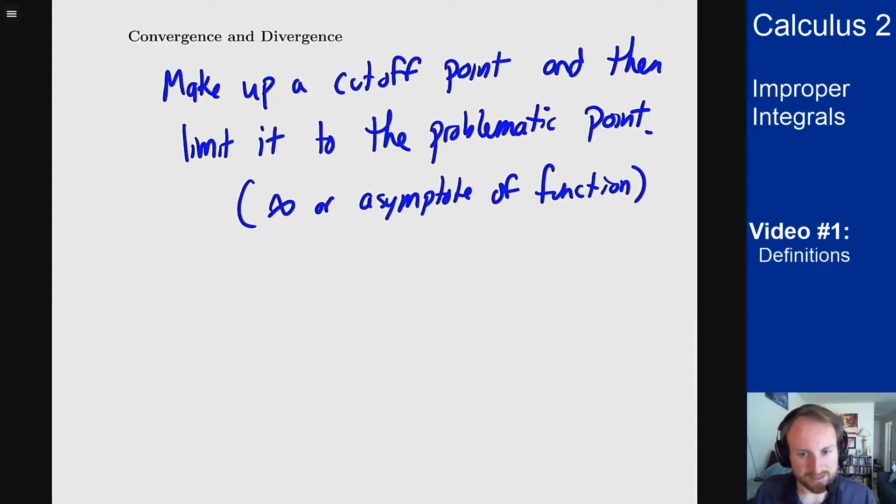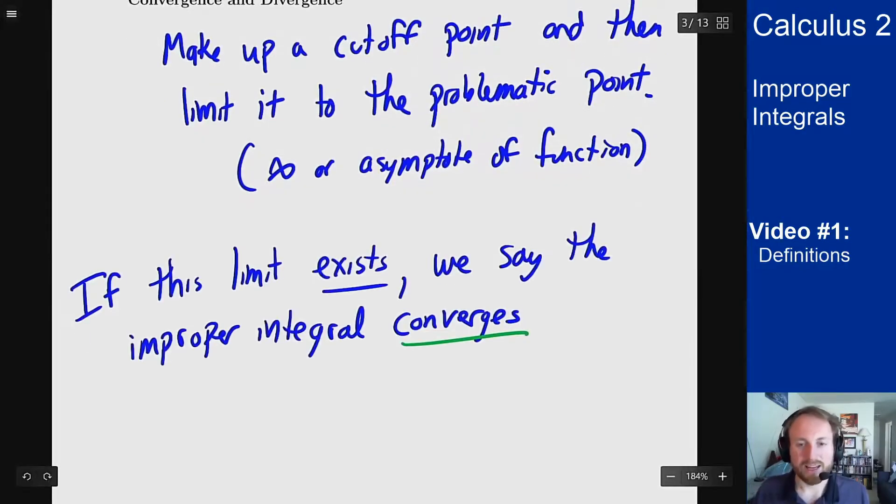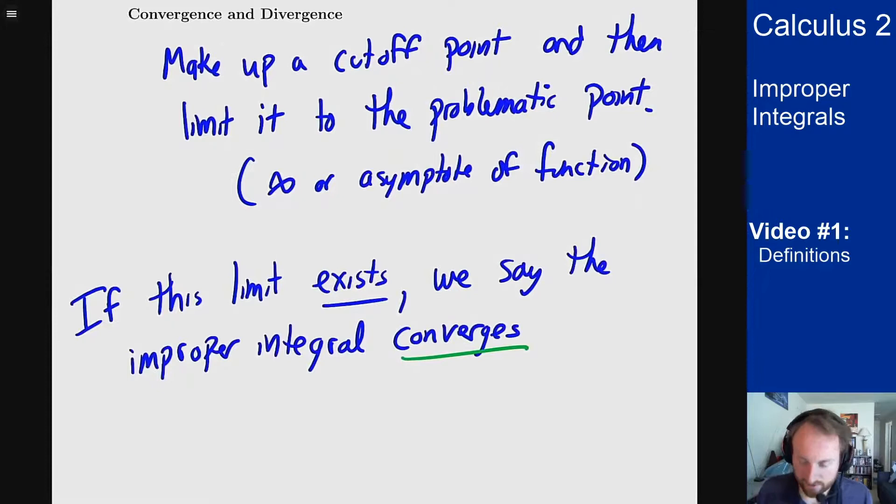If this limit exists, then we say the improper integral converges. And if it doesn't exist, then we say this improper integral diverges.